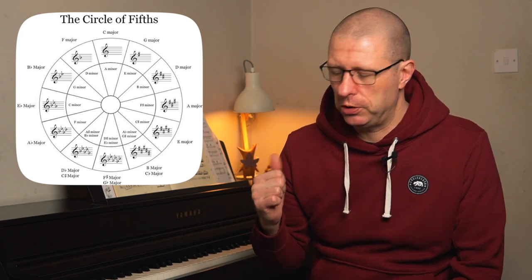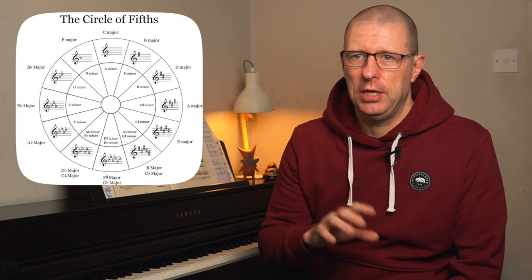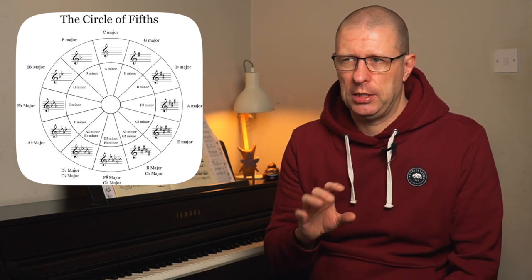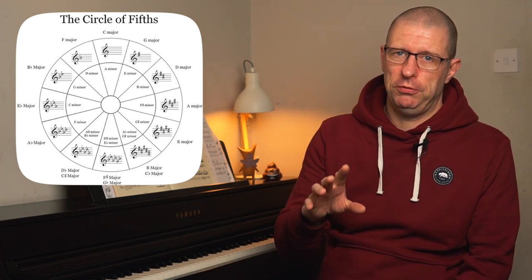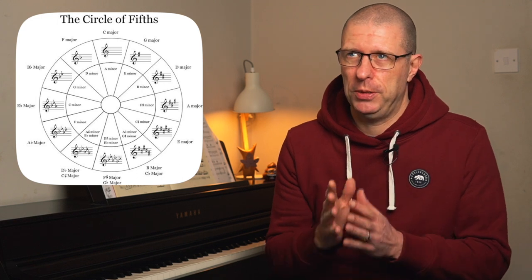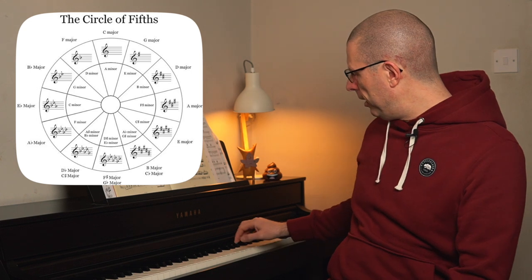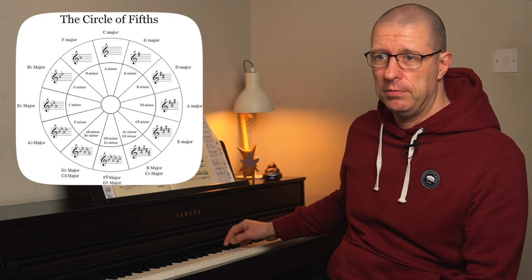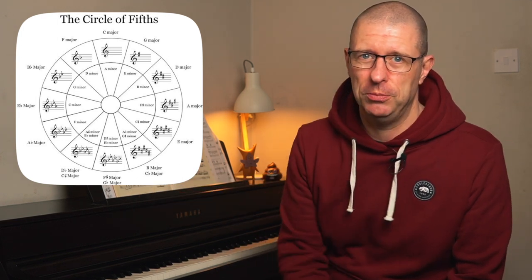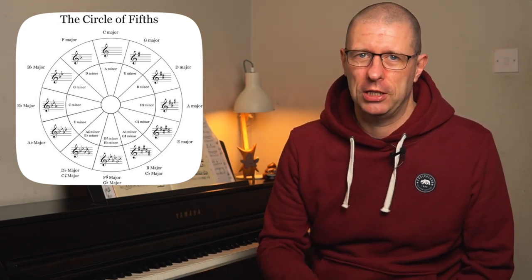Let's go into how to actually read what's on the screen. On the outside circle we've got the major keys, and if you look towards the bottom, when you get to the likes of F sharp major you'll see the enharmonics as well, which would be G flat. Enharmonic basically means it's a different name for the same note — F sharp and G flat sound exactly the same note but have a different name. That's what enharmonic means.